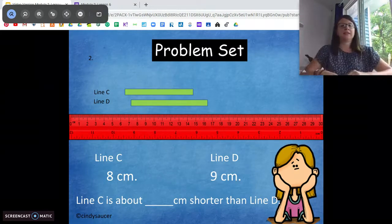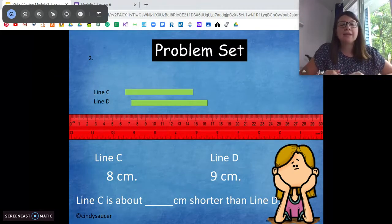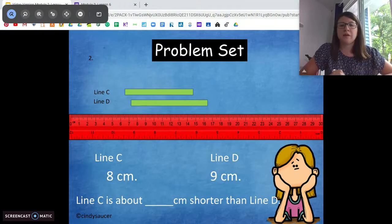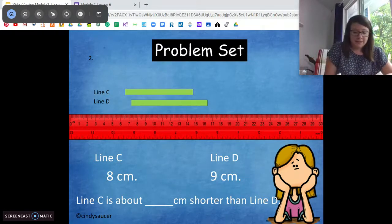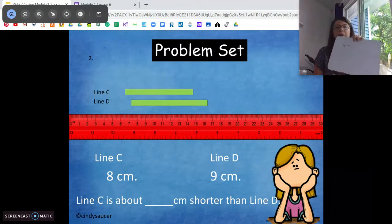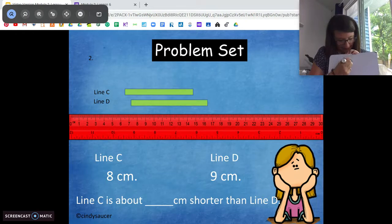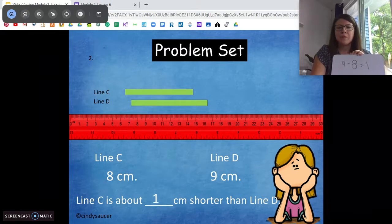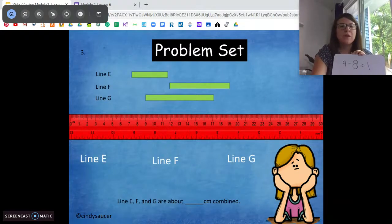All right, so our statement on the bottom says line C is about the length centimeters shorter than line D. That's a little bit of an easy one. Line D, I know, is nine centimeters. And we want to find the difference than line C, and that's eight centimeters. Nine minus eight is one, one centimeter difference. Awesome.